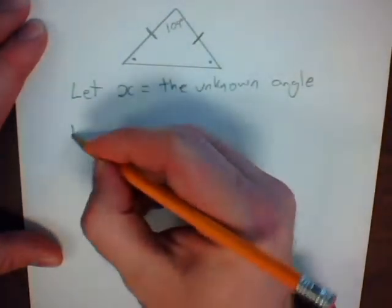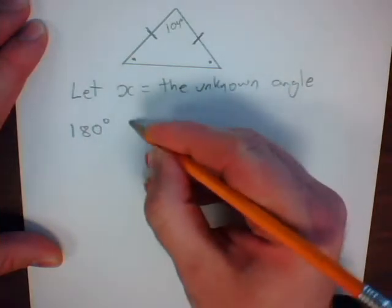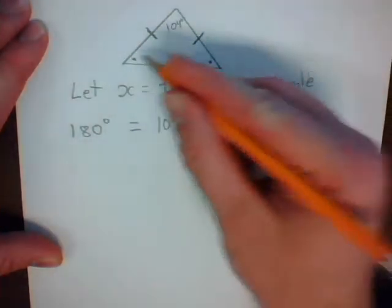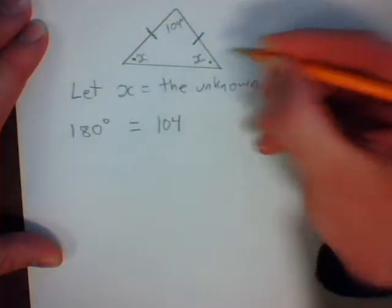As we've learned earlier, we know that all triangles equal 180 degrees. We simply add all the unknown angles, these are now both x.